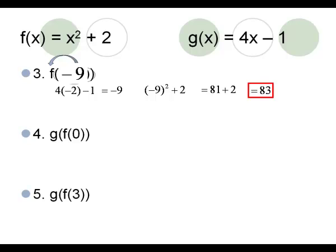Number 4 — I'll do this one with you and then let you try number 5. We're going to start with the innermost right part, which is f of 0, Frank of 0. You're replacing x with 0: 0 squared plus 2 is 2. You're taking that answer 2 and replacing it into George's equation. 4 times 2 and then minus 1 gives you an answer of 7, and that's your final answer.